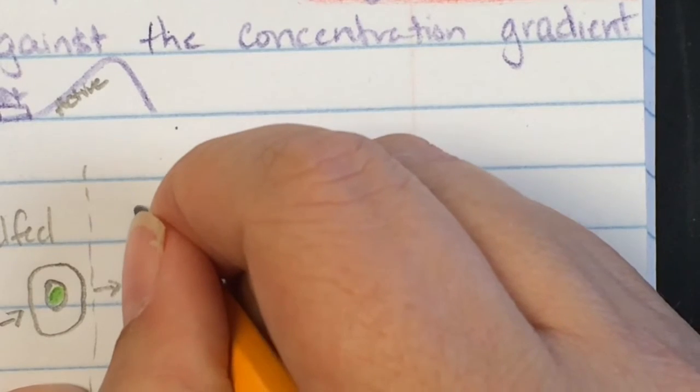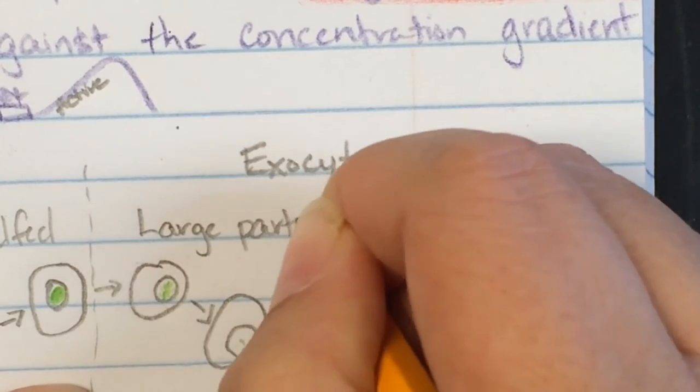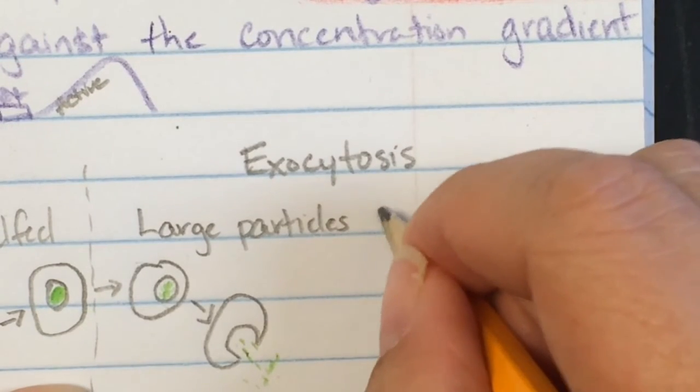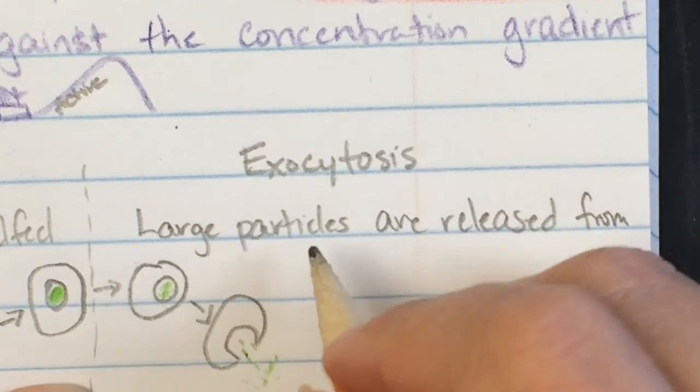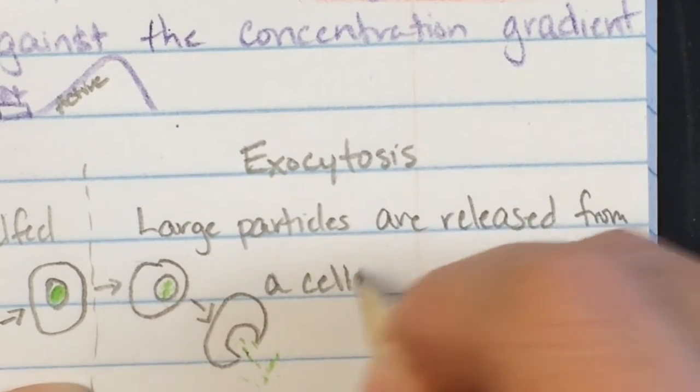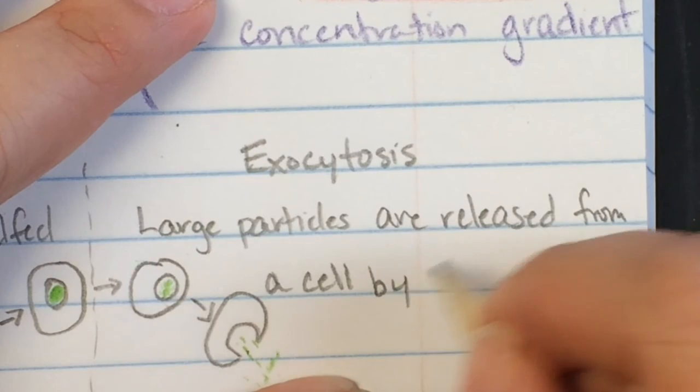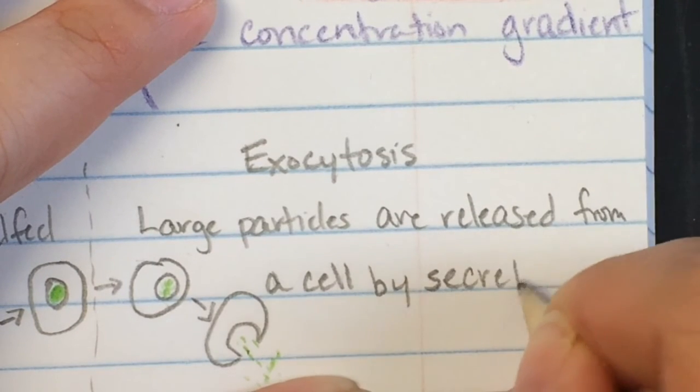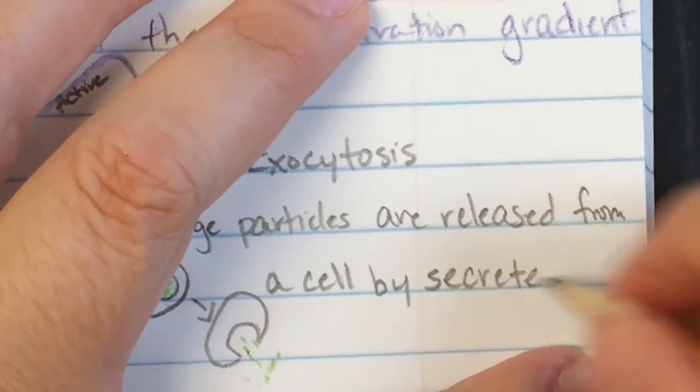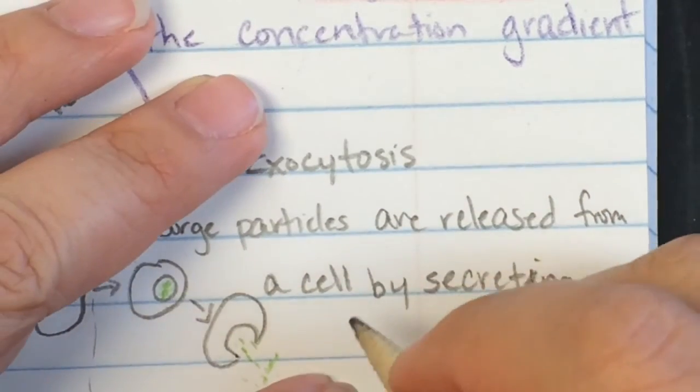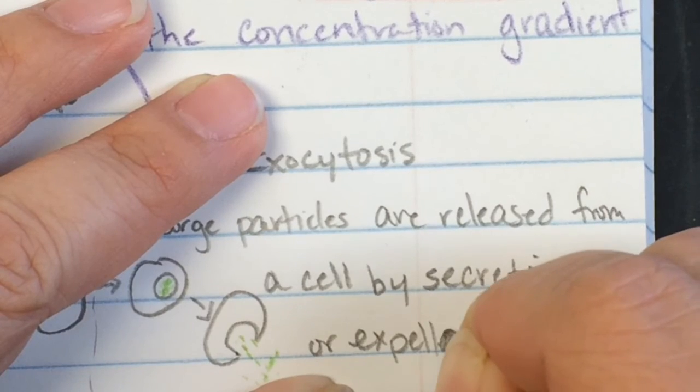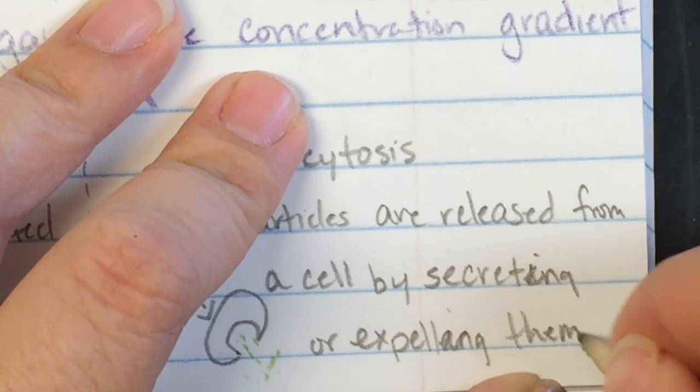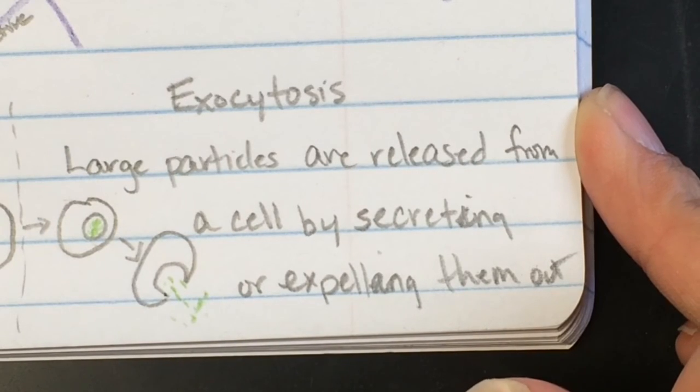So large particles are released from a cell by secreting, I love that word secrete, looks like secret but it's got an extra e, by secreting, oh it should be ing sorry, secreting or expelling them out.